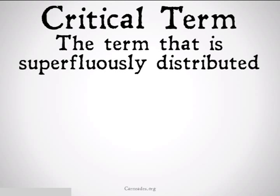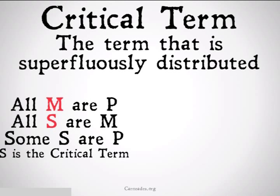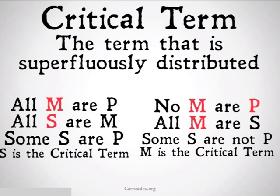The critical term means the term that is superfluously distributed. In the first example, S is the critical term, and in the other example, M is the critical term. If you want more information on this, check out my video on rule five.